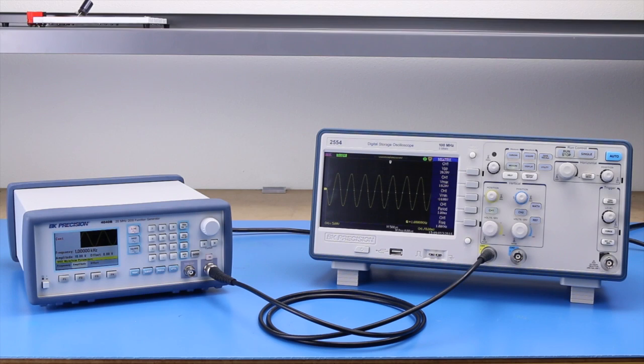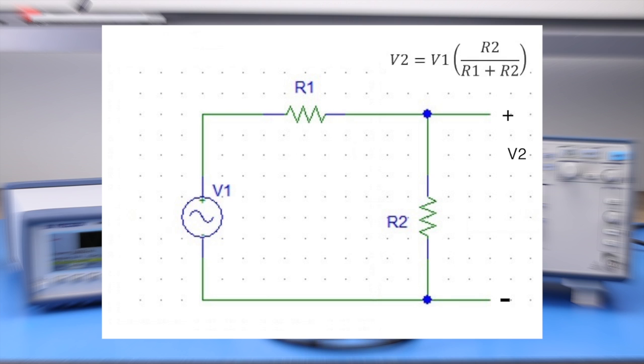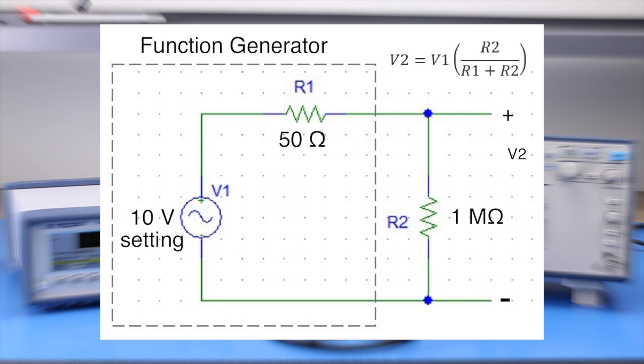This relationship can also be seen through a common voltage divider circuit. The amplitude of the generator is correct when the generator's output is terminated in a load that matches the output impedance.